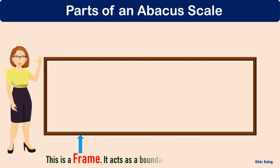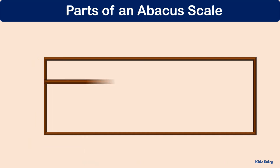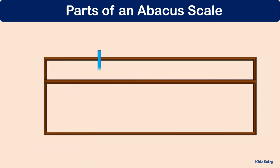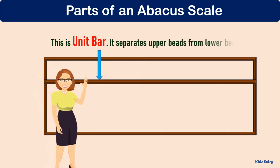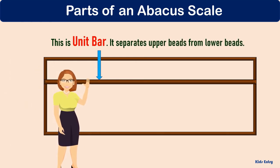Parts of an abacus: This is the frame — it acts as a boundary for all other parts. This is the unit bar — it separates the upper beads from the lower beads.